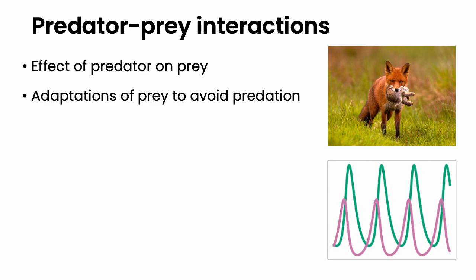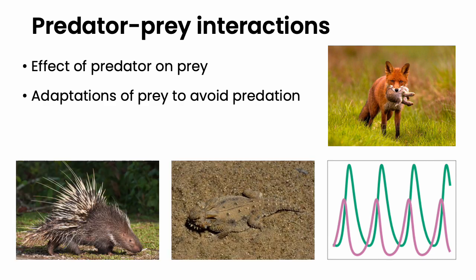People also talk about the adaptations of prey to avoid predation, such as camouflage and other defense mechanisms, and this leads to something called the Red Queen dynamics in evolution. However, something that people don't talk about is the effect of the prey on the predator itself.